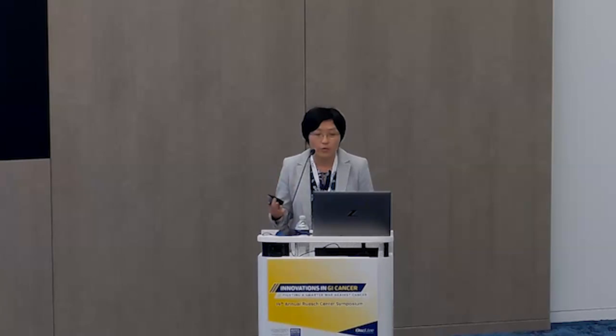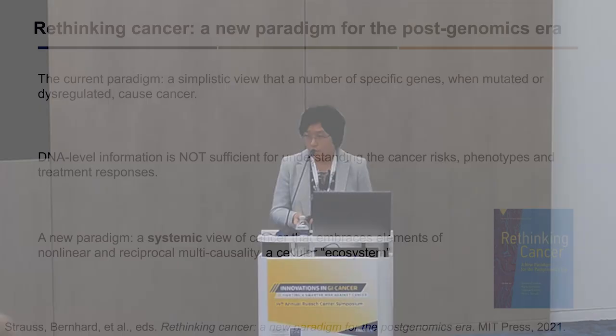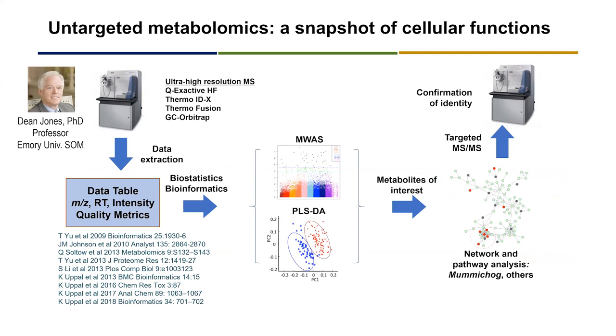A new paradigm is needed. This paradigm calls for a systematic review of cancer that embraces all these different elements, different associations, different correlations that sometimes are even weird to put together. We really need to understand the cellular ecosystem, rather than just a single component of the cells. This is because, by nature, the biological system is complex and dynamic.